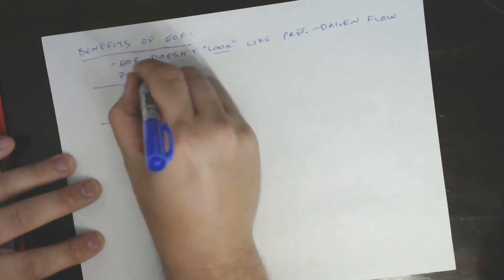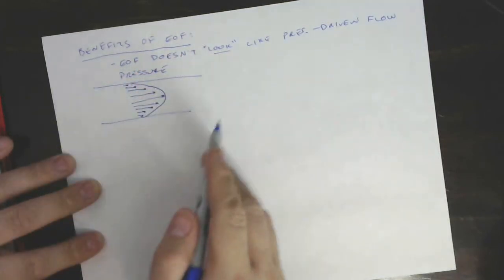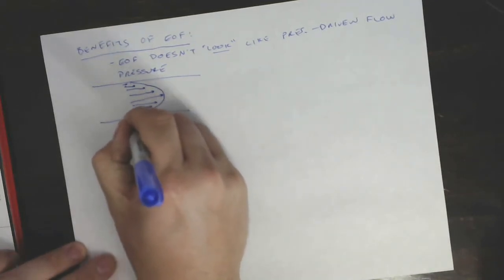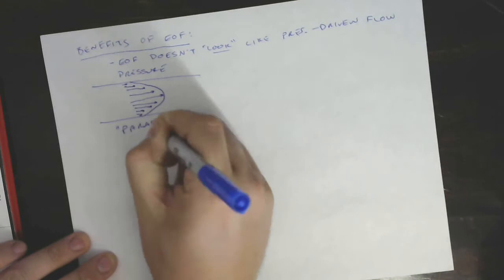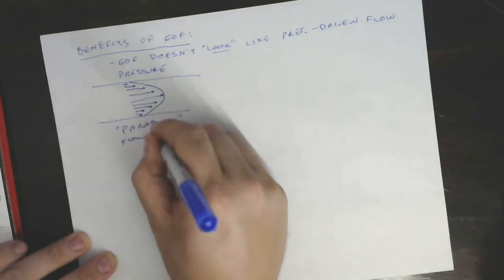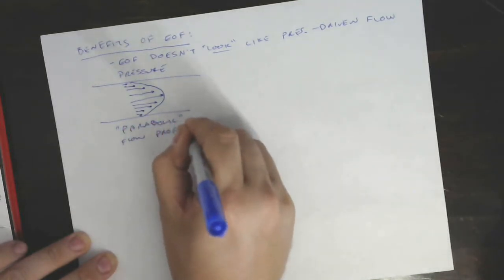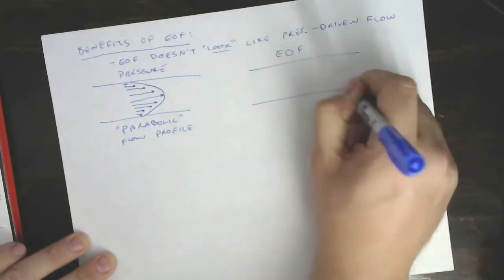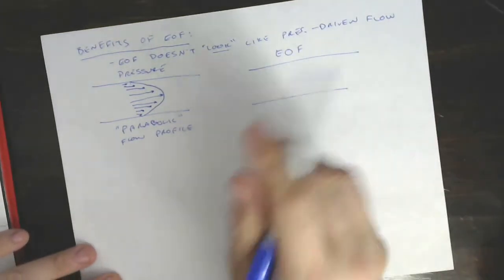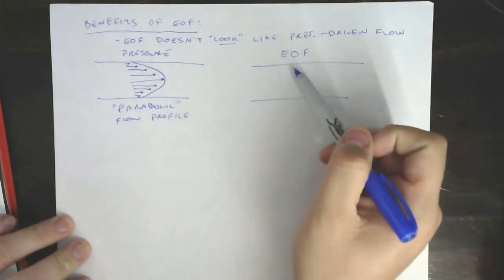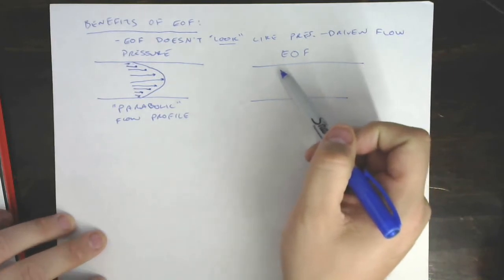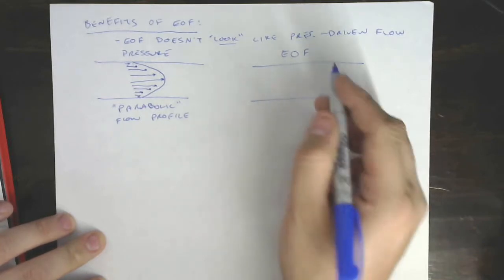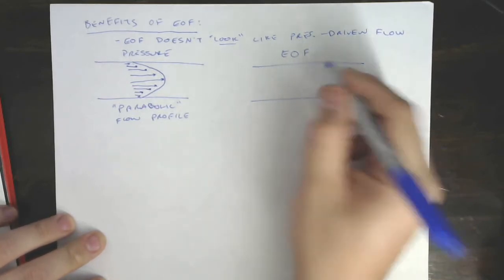So this is with pressure being applied to move that flow and we get a parabolic flow profile. With EOF, however, flow starts at the wall is a phrase that we say often about this stuff. Flow starts by the electrophoresis basically of the buffer ions in the electric double layer.